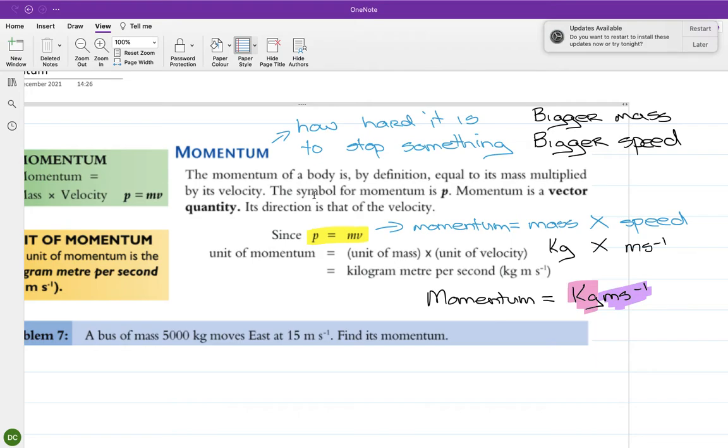We'll have a look at this question here. A bus of mass 5000 kilograms moves east at 15 meters per second. Find its momentum. So we go momentum, we can start using p, equals mass times velocity or mass times speed. The mass is 5000, and we should always do a little units check. So it's 5000 kilograms. Kilograms is the correct unit for mass, so that's actually fine to use. The speed then is 15, and again it's meters per second which is the correct unit. So it's 5000 multiplied by 15.